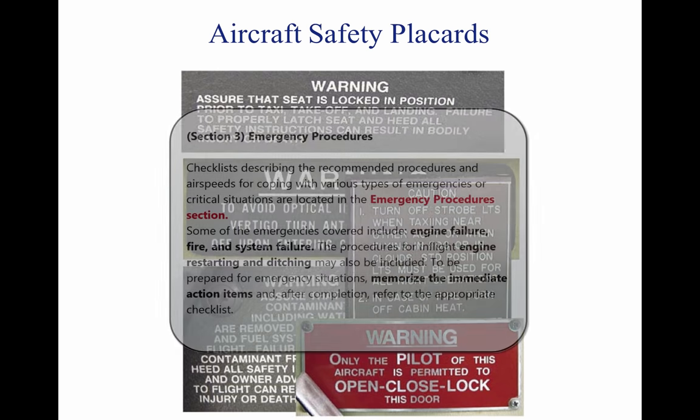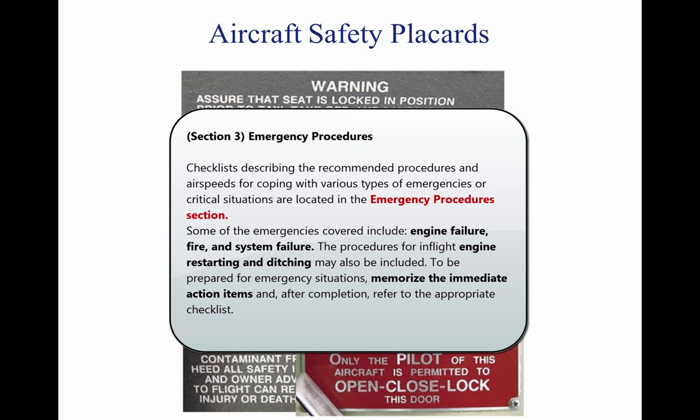Section 3: Checklists describing the recommended procedures and airspeeds for coping with various types of emergencies or critical situations are located in the Emergency Procedures section. Some of the emergencies covered include engine failure, fire, and system failure. Procedures for in-flight engine restarting and ditching may also be included. To be prepared for emergency situations, memorize the immediate action items and, after completion, refer to the appropriate checklist.